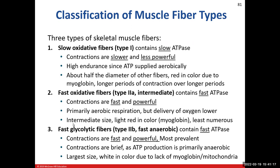We have three types of skeletal muscle fiber types. The first one is the slow oxidative fibers, or type one. The word 'slow' describes the myosin ATPase — the enzyme that breaks ATP, hydrolyzing it into ADP and inorganic phosphate. This fiber type contains the slow variant of ATPase.